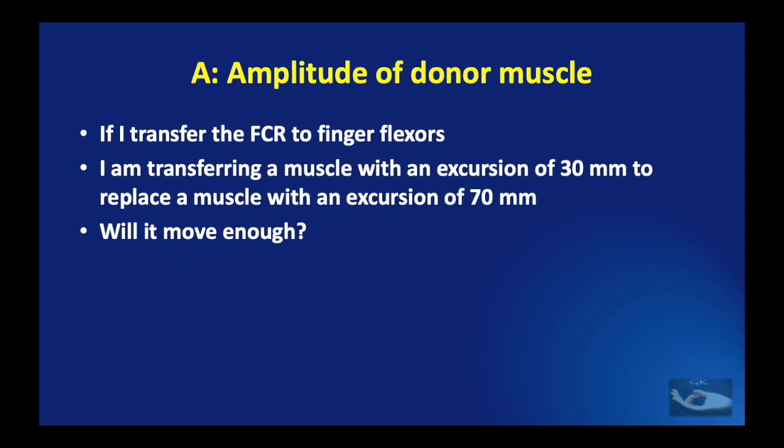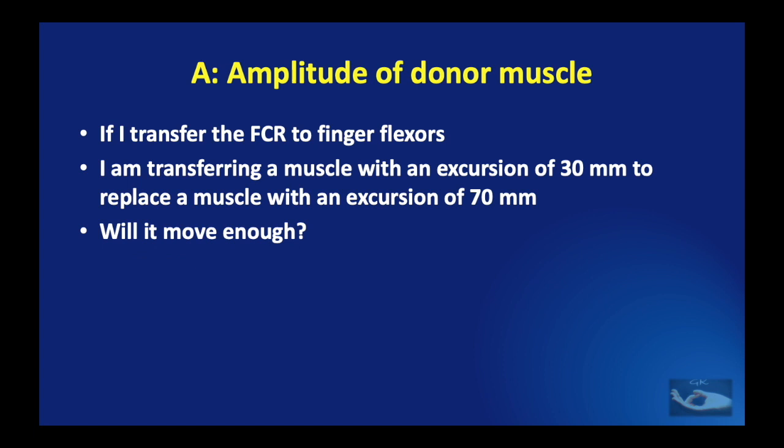Consider a hypothetical tendon transfer. If I transfer the flexor carpi radialis to the finger flexors, I am transferring a muscle with an excursion of approximately 30 mm to replace a muscle with an excursion of 70 mm — the resultant finger movement would definitely not be enough. On the other hand, if I transfer the flexor carpi radialis to the finger extensors, I am transferring a muscle with an excursion of about 30 mm to replace a muscle with an excursion of around 50 mm. That will almost work, if the excursion of the flexor carpi radialis can be increased to a certain extent.